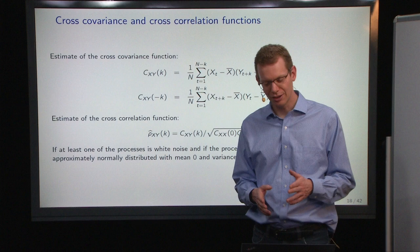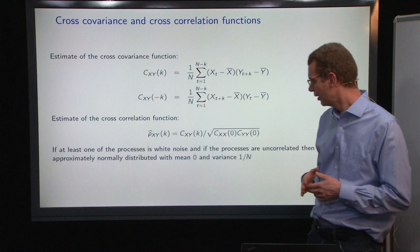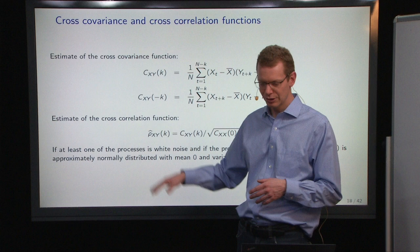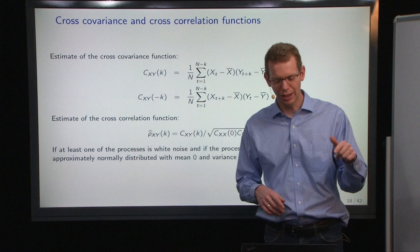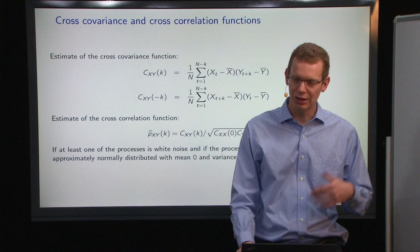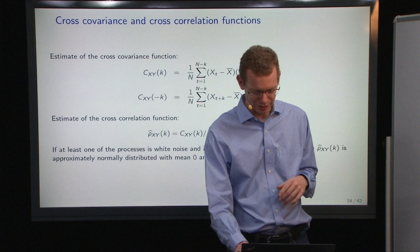And also, if one of the signals is white noise, then the estimated variance of the cross-correlation function is 1 over n. So we get the same 2 divided by the square root of n as plus minus that as our uncertainty or standard error prediction interval in case there's no cross-correlation.